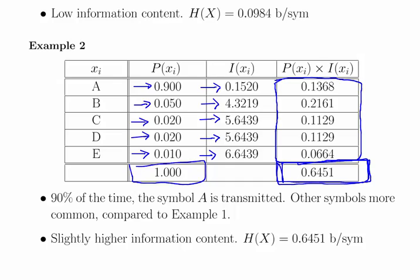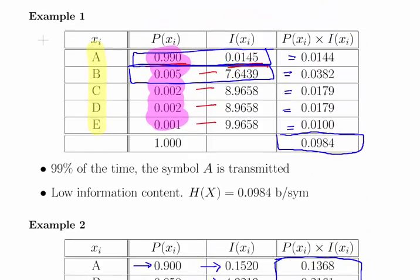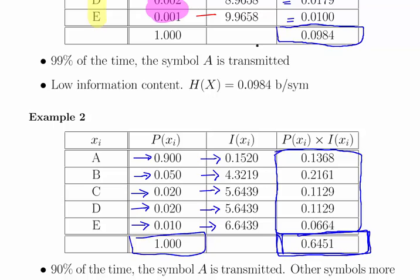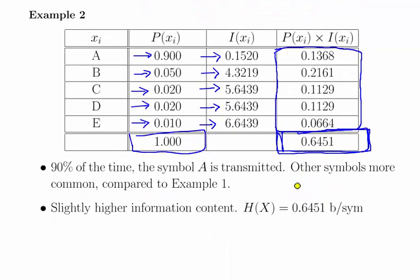This time there's more entropy. In the previous example where it's 99% A, now it's just 90% A. So it goes up from 0.09 to 0.6451. Slightly higher information content essentially.